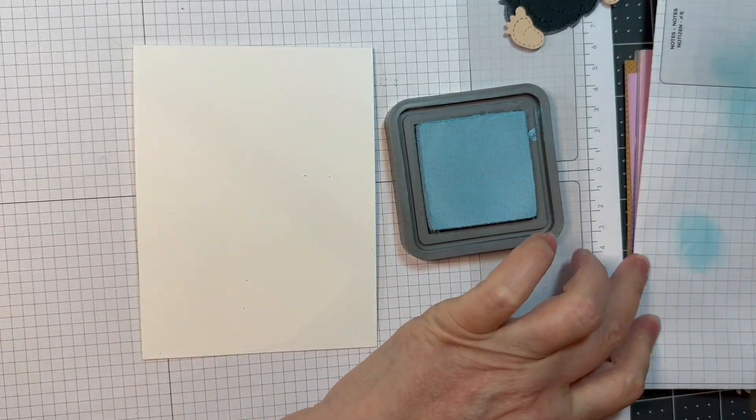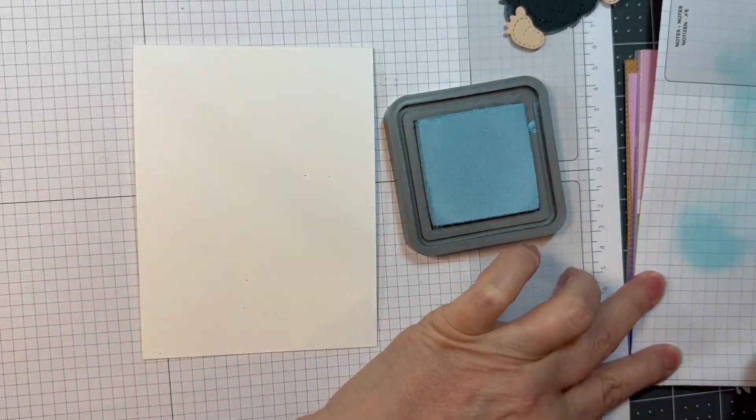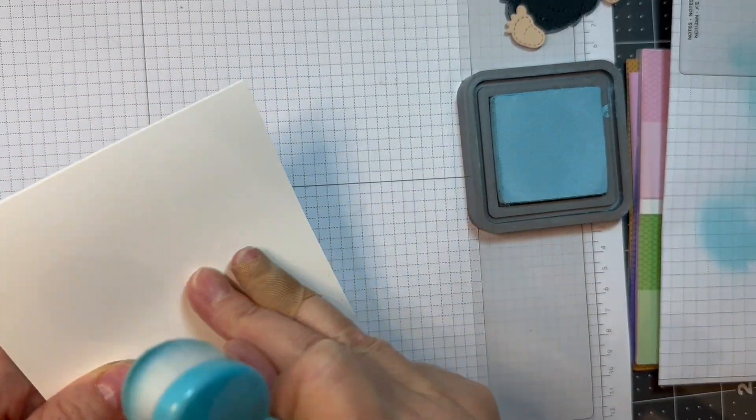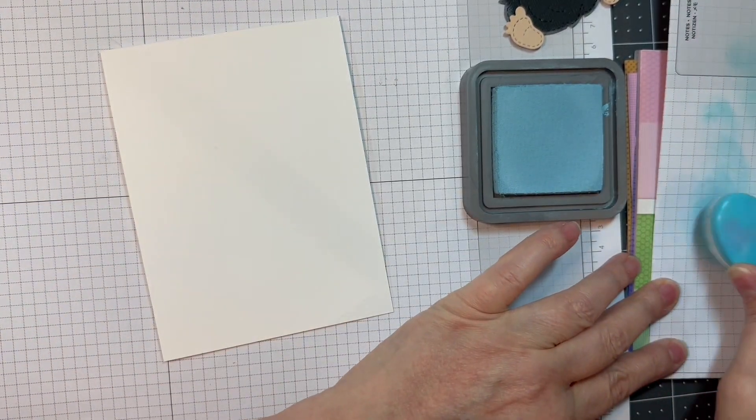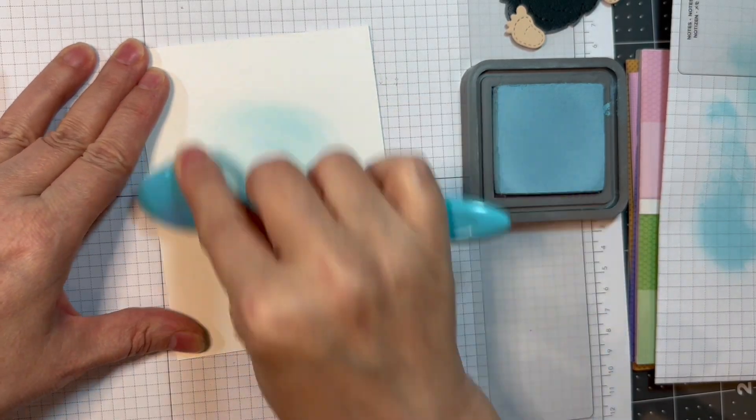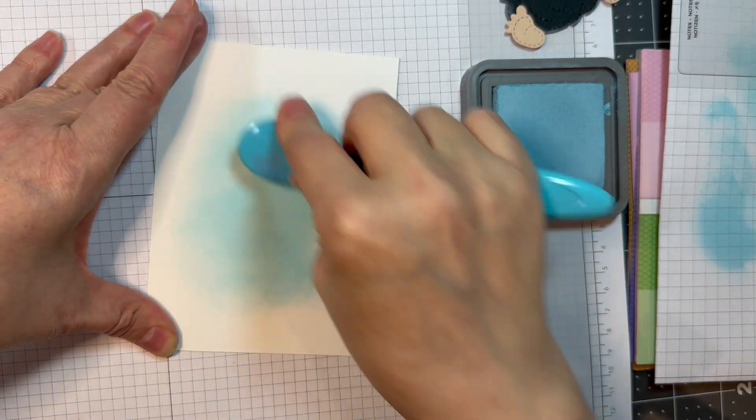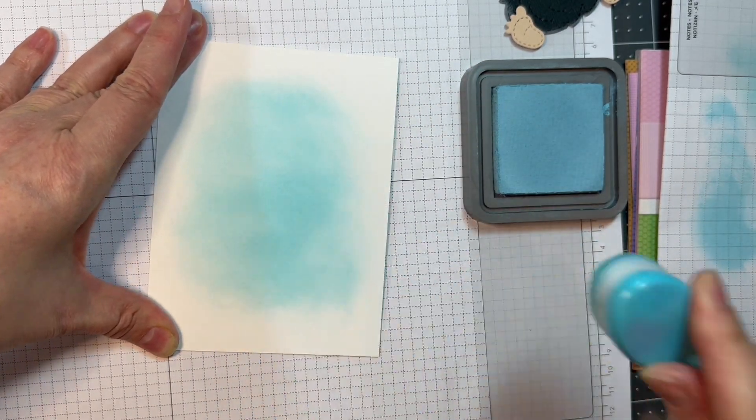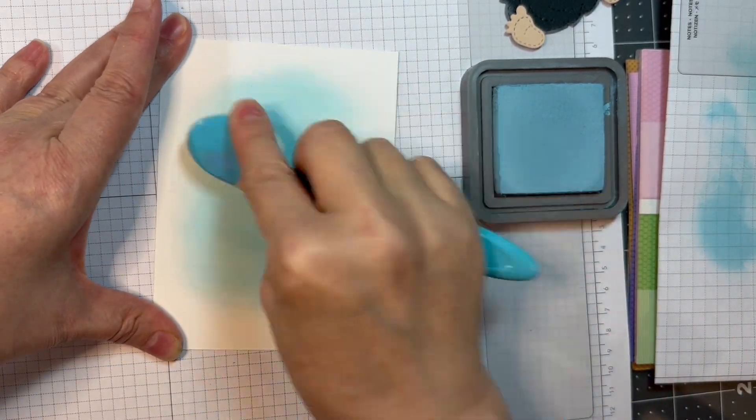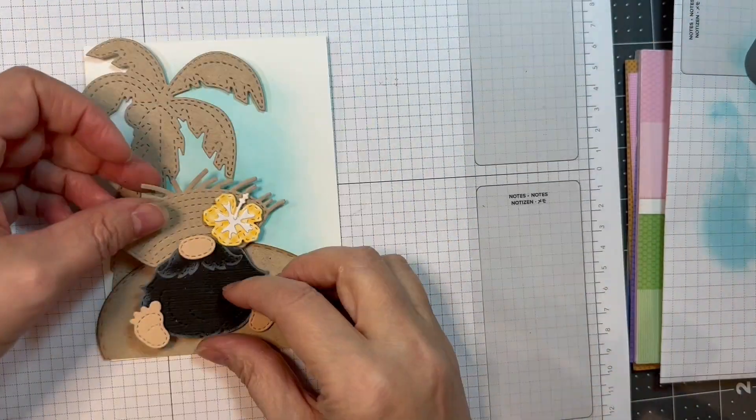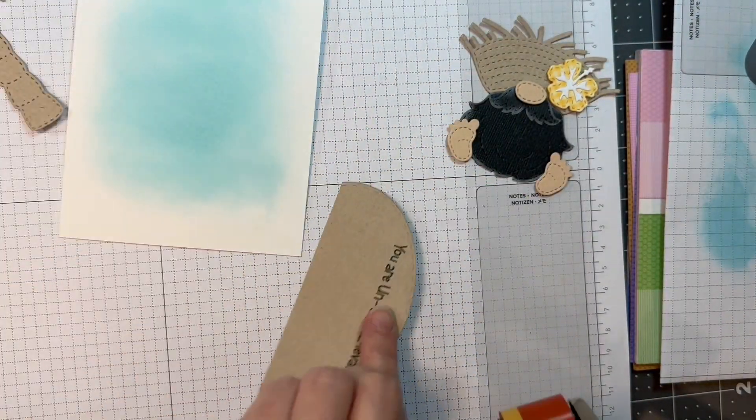Now I'm taking some Tumbled Glass Distress Oxide Ink and I'm going to ink blend sort of in the center of my card front. This doesn't have to be perfect because it's going to be behind my images, but you can get a decent blend and it does settle back into the cardstock a little bit, the dye part of it. The pigment part sits on top.